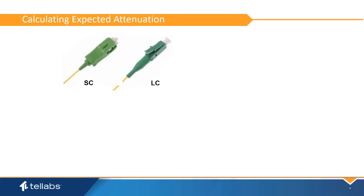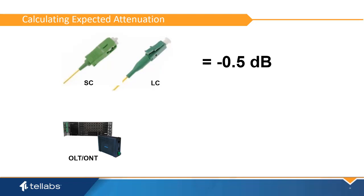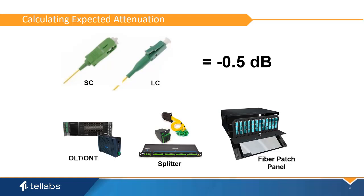The number of connection points in the PON span should also be considered when calculating expected attenuation. Most LC and SC connectors will typically create 0.5 dB of attenuation each. Connection points are typically found at the OLT and ONT transceivers, the splitter, and the fiber optic patch panel. Fiber splice connections are not typically used to calculate expected attenuation, as that connection type should create very small loss levels.